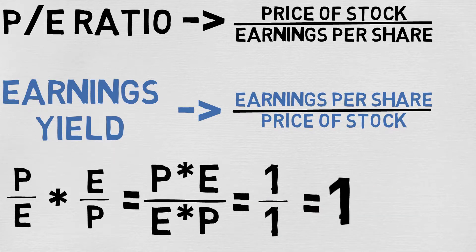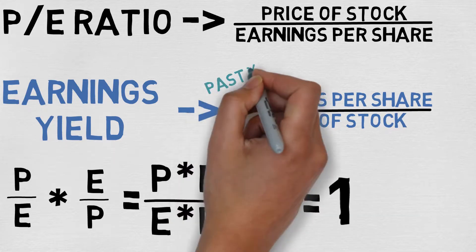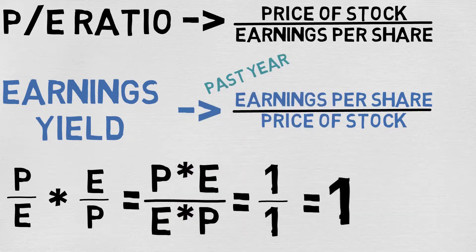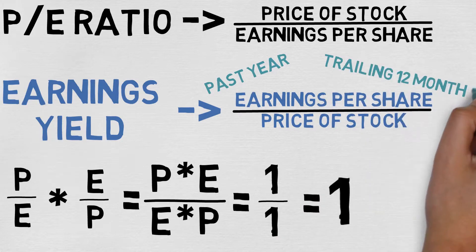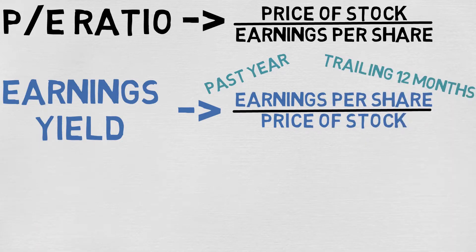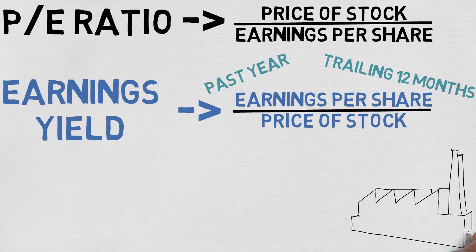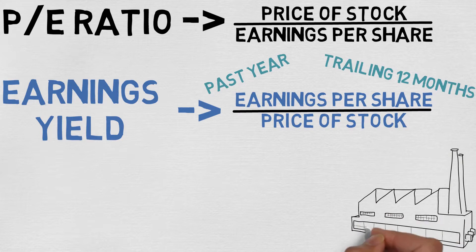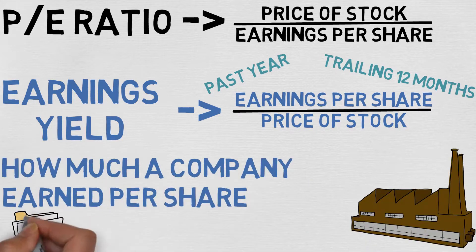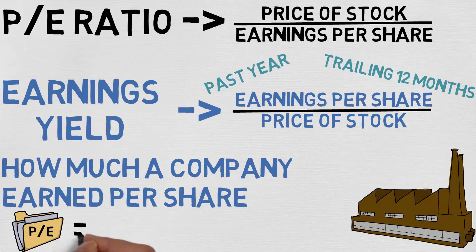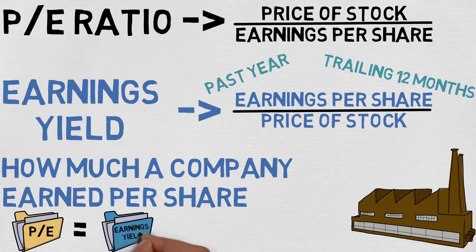For the earnings per share, we can use EPS for the past year or EPS of trailing 12 months. Earnings yield tells us the percentage of how much a company earned per share. It basically tells us the same information that P/E ratio does, but in a different way.